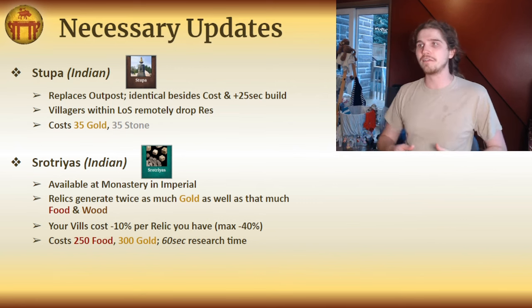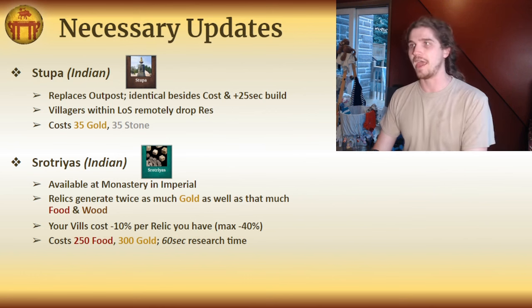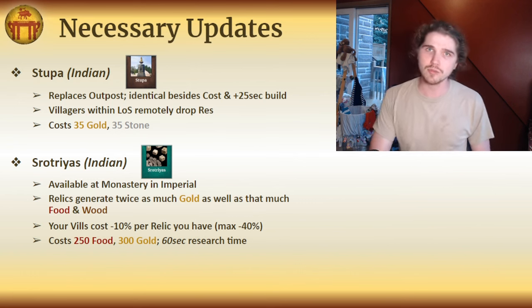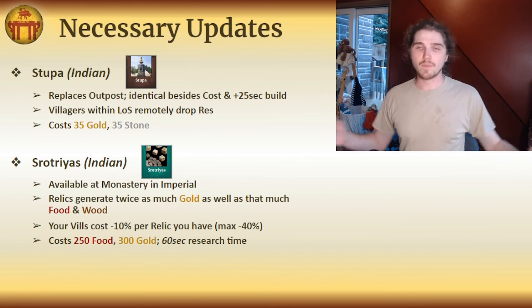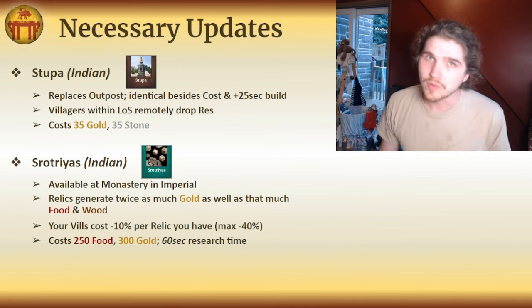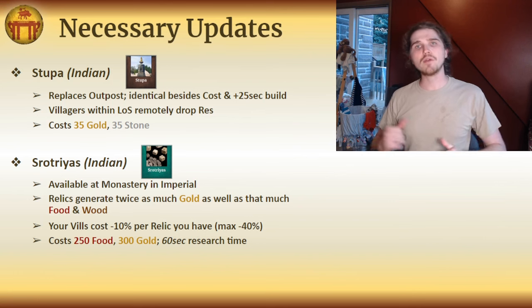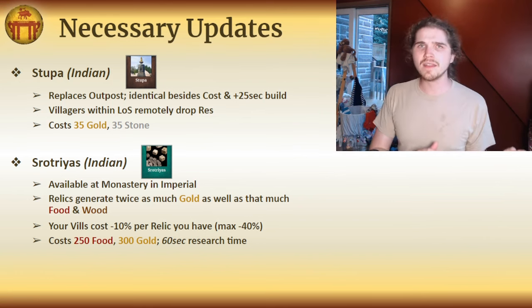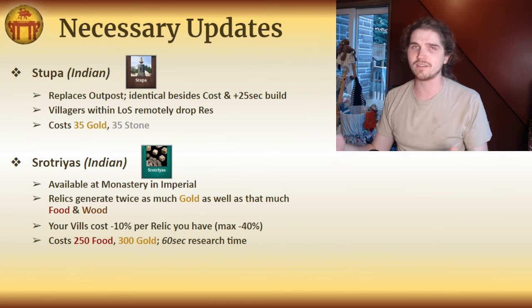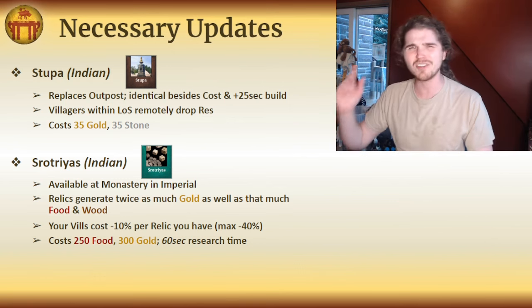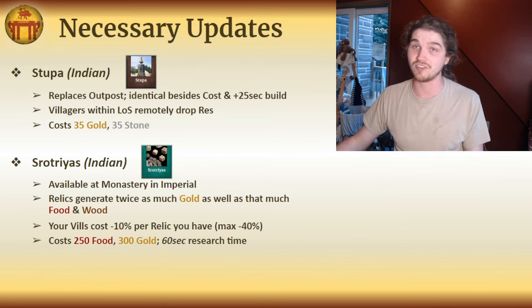You have to actively research Srotrias, which is a benefit because if you don't have any relics, you don't need to tech into it. Not only will this technology make you really want to keep relics away from Indian civilizations, but it references the fact that historical temples would use amassed wealth to give back to the community via hospitals and shelters — hence the villager discount — while also collecting tithes from the populace in food and resources, hence the relic bonus. Both of these technologies have a distinctly economic bent and will make Indian civilizations very strong economically.